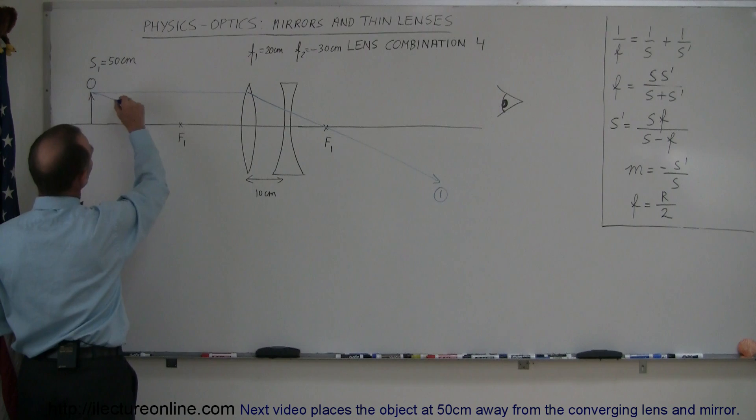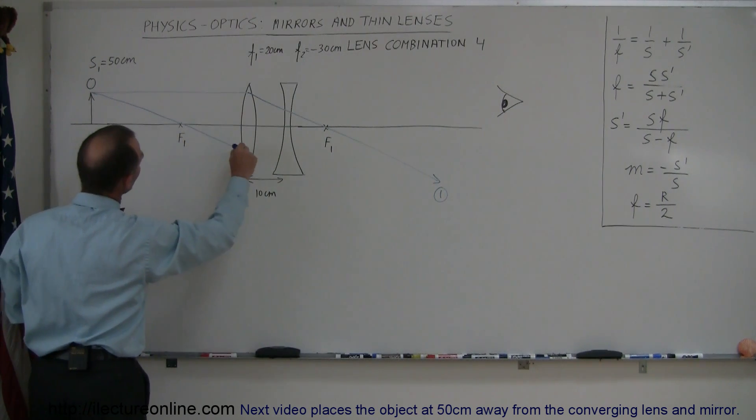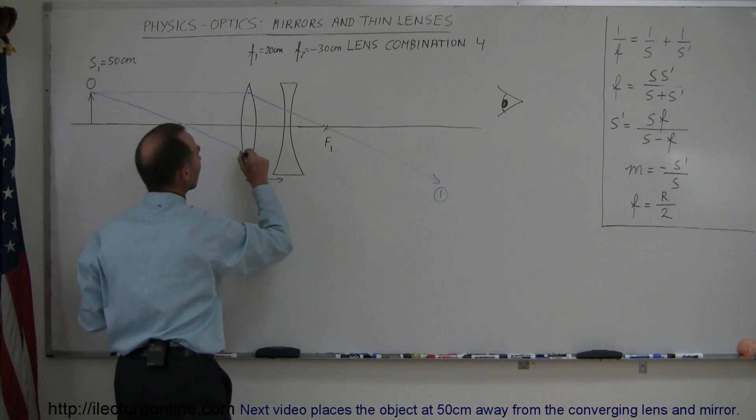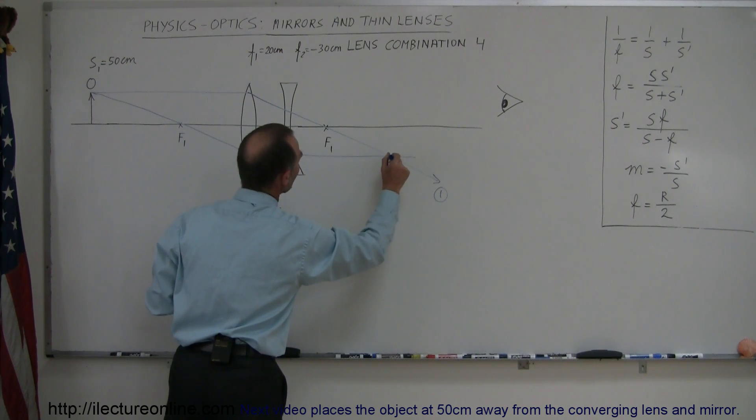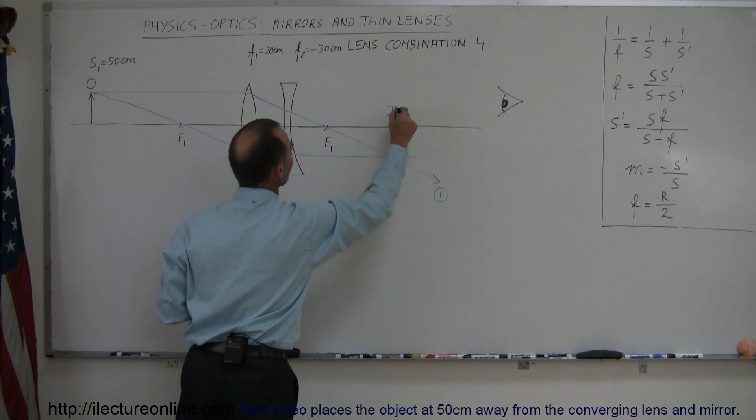Through the focal point on the front side until we hit the lens, the ray will bend and continue on to the right horizontally. Where the two meet, right there is where the first image is formed. So this is image 1.